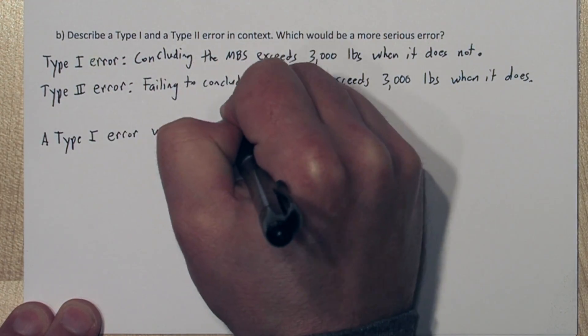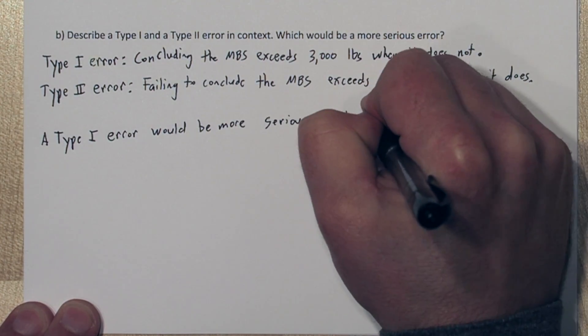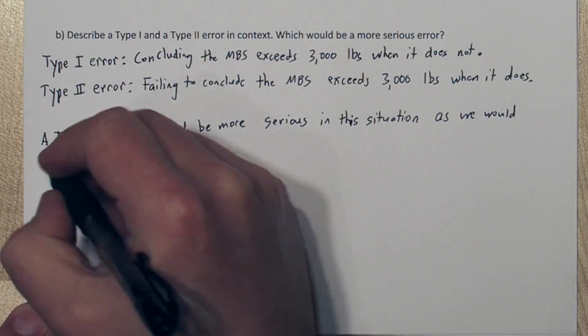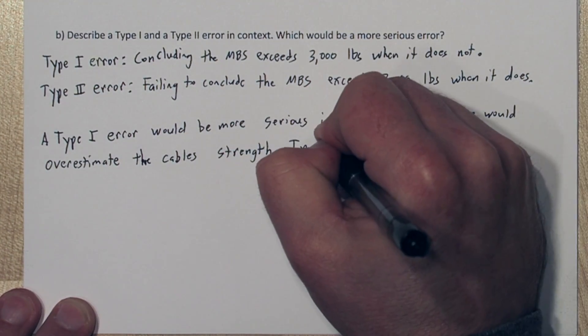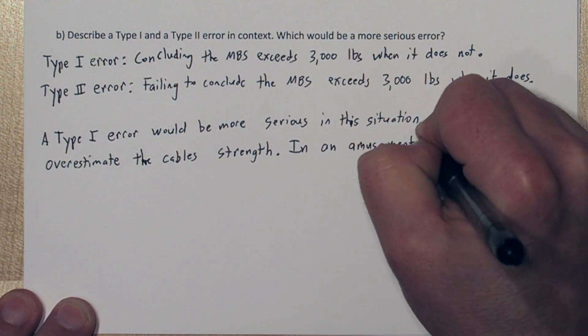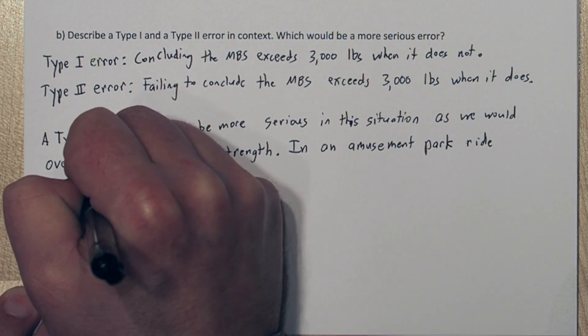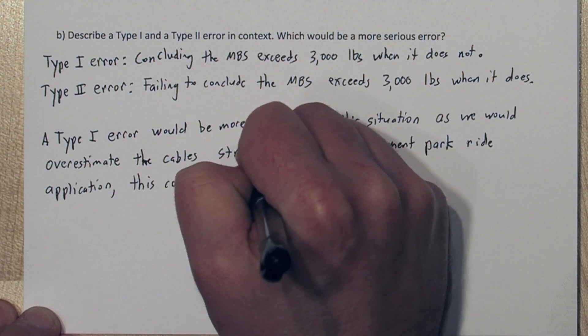In our situation, since we rejected the null hypothesis, the only possible error we could have made is a type 1 error. And a type 1 error would be more serious in this situation, as we would overestimate the cable's strength. In an amusement park application, this could be very dangerous.